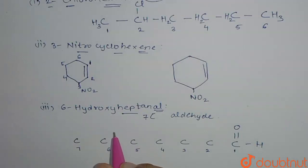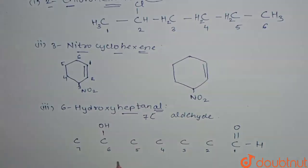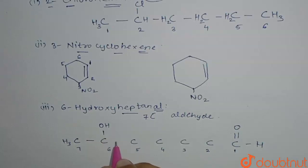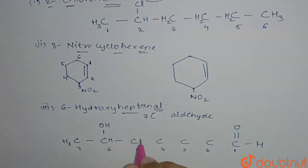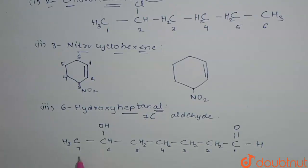Next it says 6-hydroxy, so it means at the 6th carbon position we have an OH group attached. This is the skeleton of the molecule. Now I will satisfy all the carbon valencies with hydrogen: H3, H, H2, H2, H2, H2. So this is the structure for 6-hydroxyheptanal.